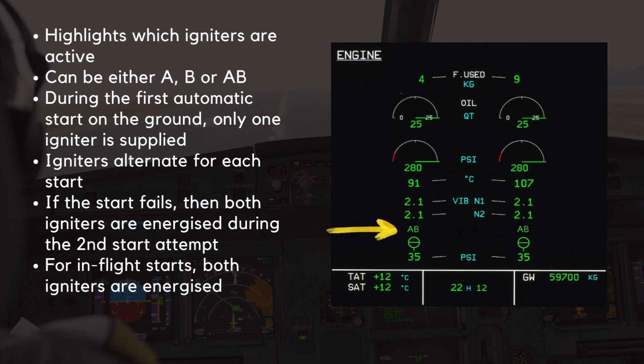The igniter indication is above the starter shutoff valve and highlights in green which igniters are active. This can be either A or B on their own, or both A and B together. The display is blank when no igniter is selected. During the first automatic start on the ground, only one igniter is supplied and the igniters alternate for each start. If the start fails, then both igniters are energized during the second start attempt. For in-flight starts, both igniters are energized.